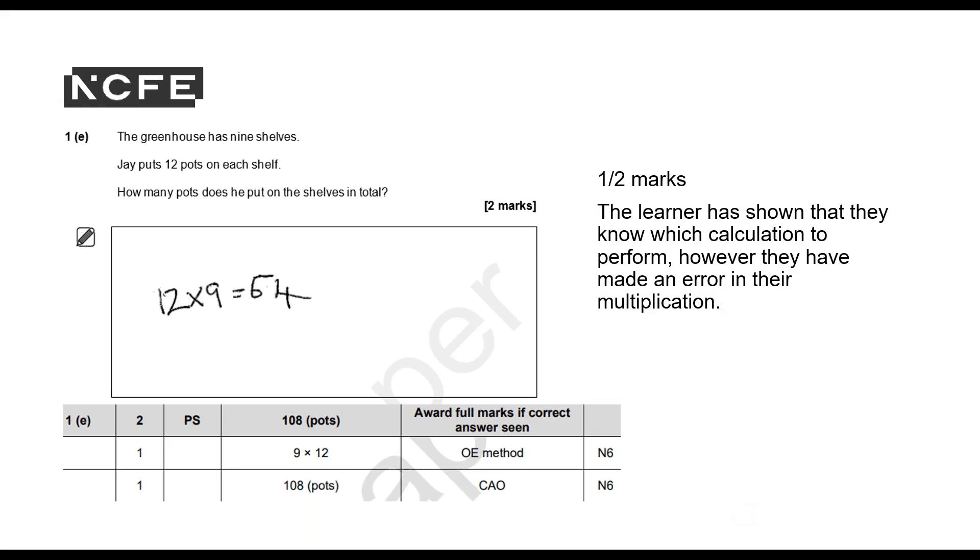Otherwise I'm going to put it on the slide now. One out of two marks. And again, the learner has shown they know which calculation to perform. We can see that they've done 12 times 9, but they have made an error in their multiplication. So they've come up with 64 being 12 times 9 rather than 108.